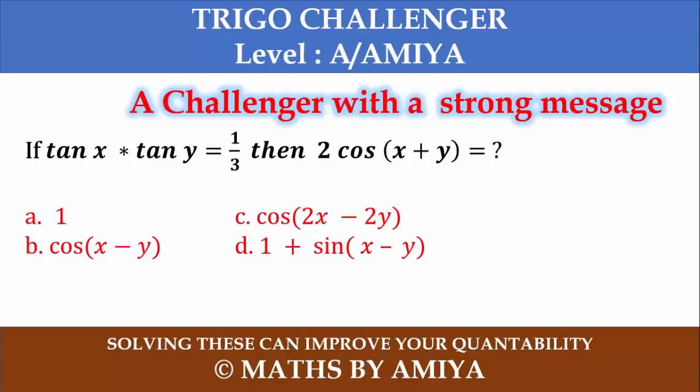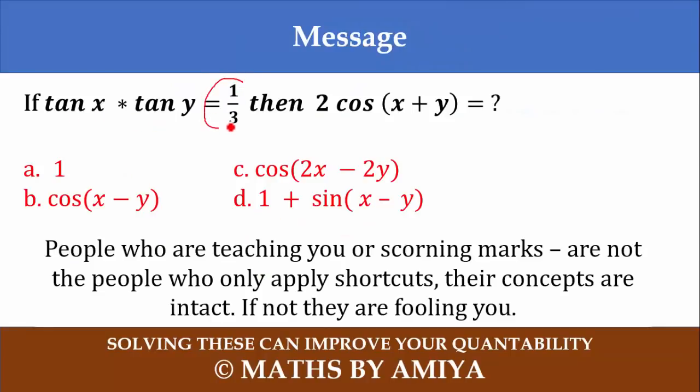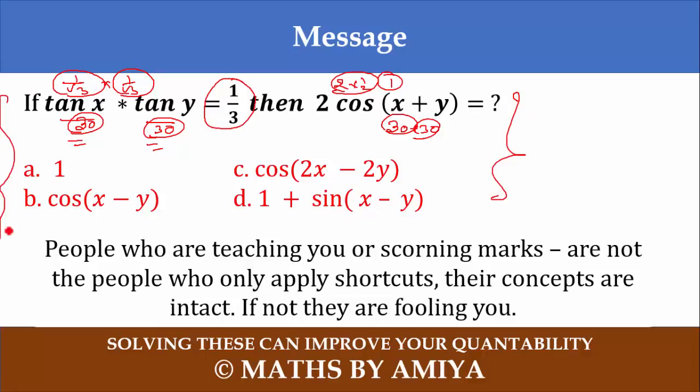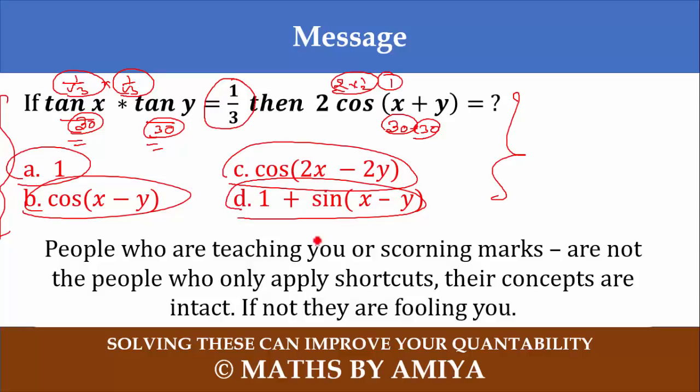So first I want to share the message. When tan x into tan y is 1 by 3, as soon as we see 1 by 3 and a product, then we think okay we assume this one is 1 by root 3, 1 by root 3. So we assume x is nothing but 30 degree, 90% students start to assume the value. If we assume 30, 30, then we have 30 plus 30, cos 60 is 2 into 1 by 2, so answer comes as 1. But as soon as you start putting value, each value would give answer as 1. Please, shortcuts and value putting don't always work because the question setter is more intelligent than you.